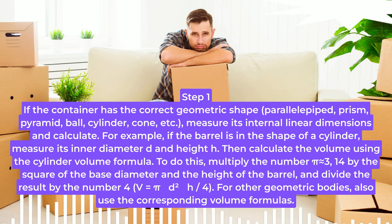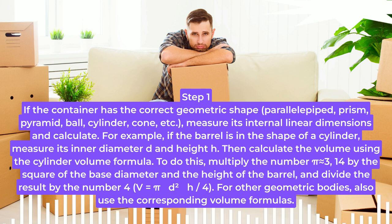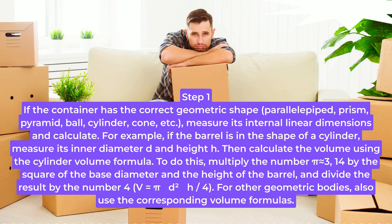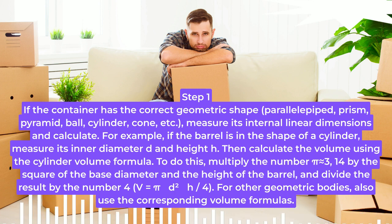For example, if the barrel is in the shape of a cylinder, measure its inner diameter d and height h. Then calculate the volume using the cylinder volume formula. Multiply pi (approximately 3.14) by the square of the base diameter and the height of the barrel, and divide the result by 4: V = π × d² × h / 4. For other geometric bodies, also use the corresponding volume formulas.